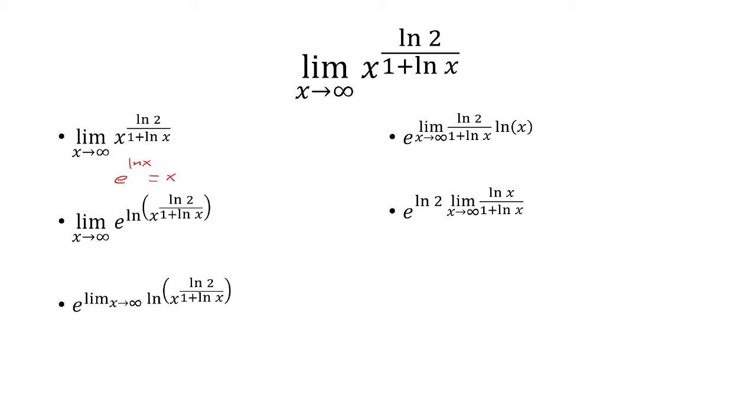Now I'm going to divide the top and the bottom by ln of x here. So that becomes 1 over 1 over ln of x plus 1.